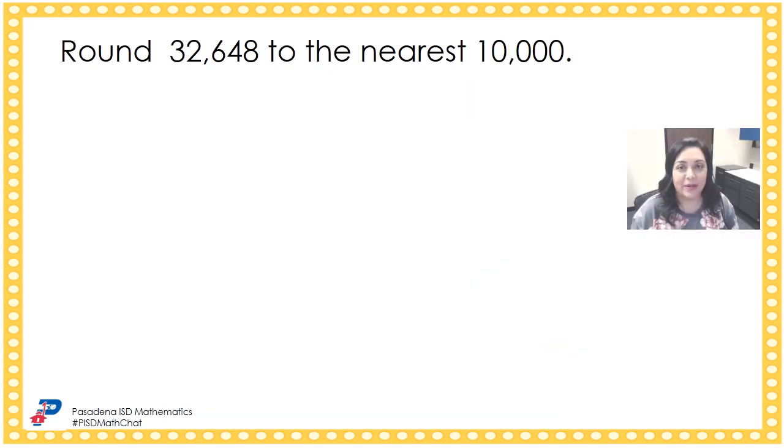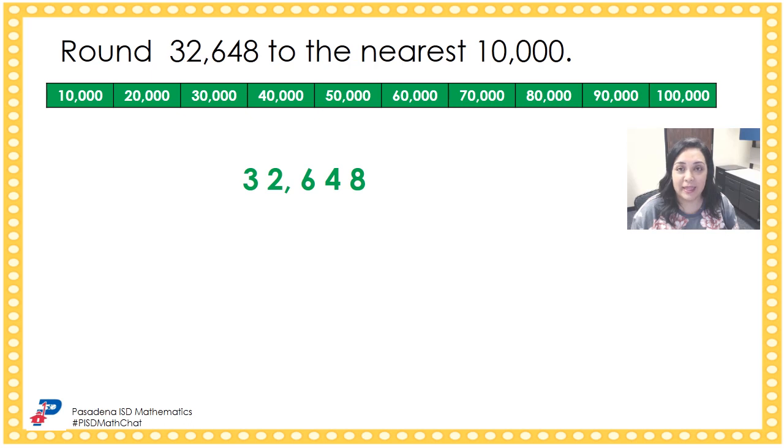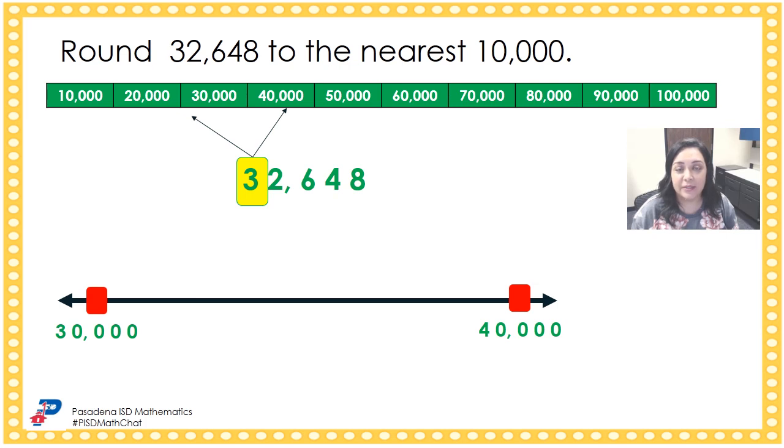Let's round 32,648 to the nearest 10,000. These are the consecutive multiples of 10,000. The digit 3 is in the 10,000 place and has a value of 30,000. The next consecutive multiple of 10,000 is 40,000. Now let's use those consecutive multiples to place the numbers on the number line. So here we have 30,000 and 40,000. Now we need to estimate the location of 32,648.